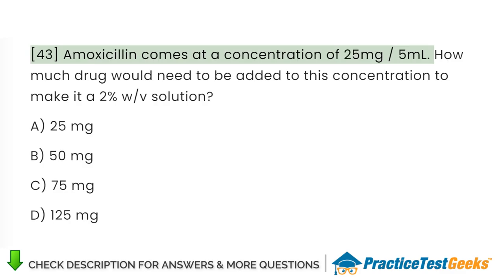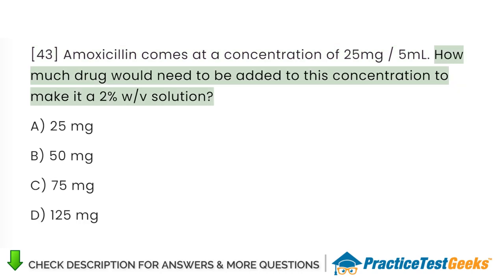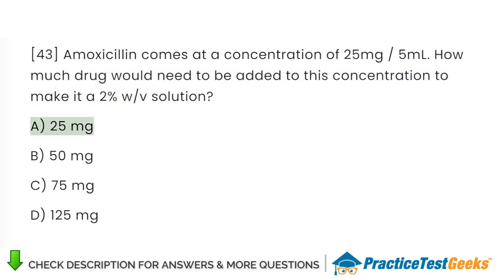Amoxicillin comes at a concentration of 25 mg/5 mL. How much drug would need to be added to this concentration to make it a 2% w/v solution? A. 25 mg. B. 50 mg. C. 75 mg. D. 125 mg.